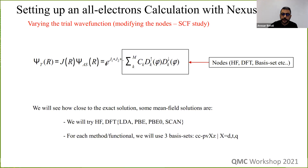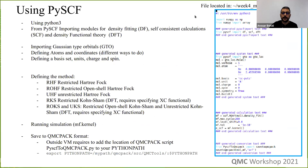First we'll assess how well DFT performs for the beryllium dimer using three to four functionals and three basis sets. All files related to this workshop will be shown. For this first part we start with just the DFT, using the B2.py file which is the beryllium-2 setup in PySCF.